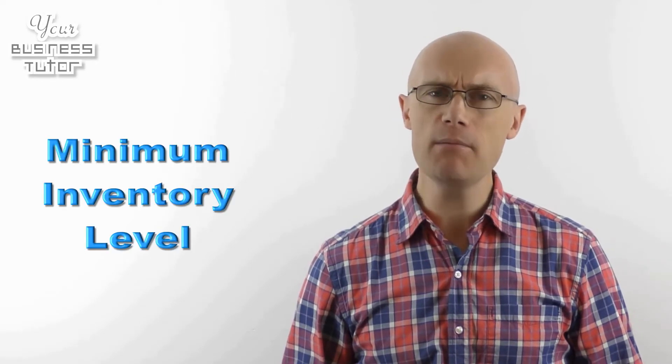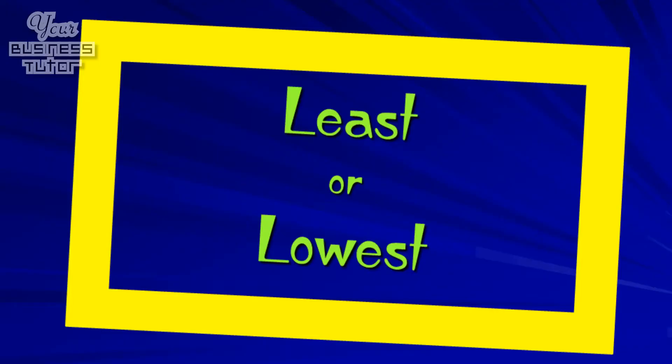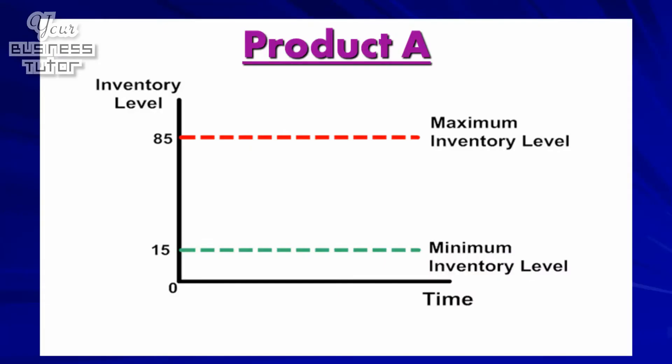After this, a business will then set a minimum inventory level that determines the least or lowest amount an organization should hold of an item of stock, which, as the green line on the diagram shows, has been set at 15 for Product A, meaning the business should never hold fewer than that amount.